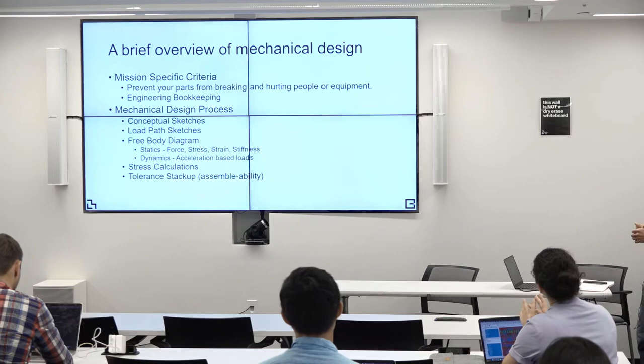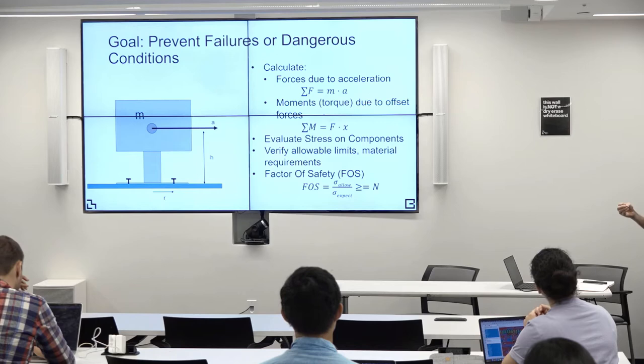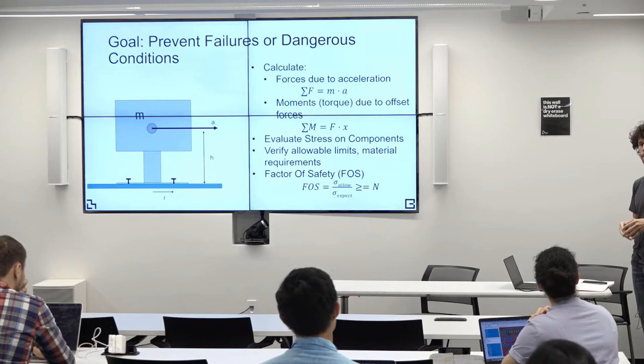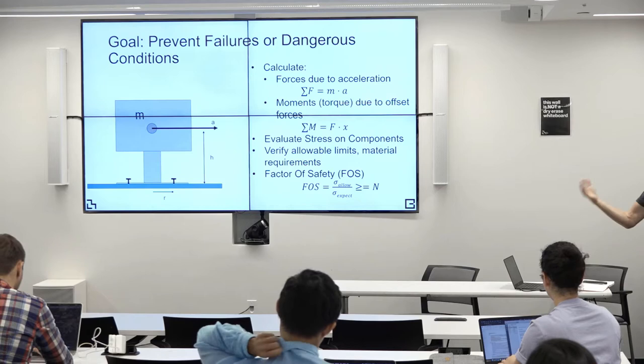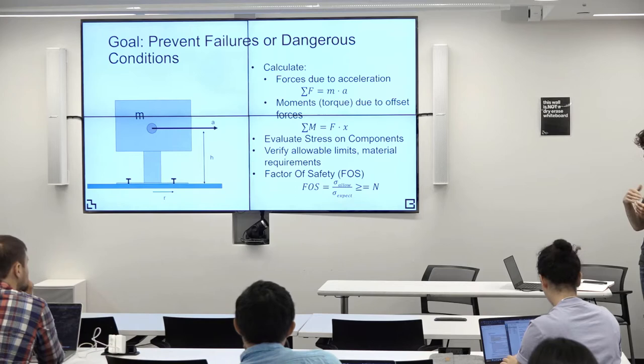A lot of times people are concerned about how strong something is — they're afraid it's going to break. But usually in mechanical design, you're actually more concerned about stiffness. How stiff is the structure you're building? Is it going to be flopping around, bending, and hitting things, causing collisions? Especially with rotating machinery, which has rotational inertia that can cause things to start flopping around and colliding.